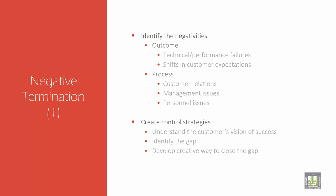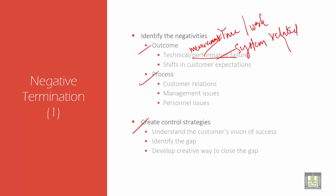Then we have negative termination. Negative termination is about how to identify your outcomes, processes, and create control strategies. First it talks about performance failure. Performance is defined as a measurement of time or work — it is system-related work accomplished with respect to time. The time required to complete a task or job is based on past performance.